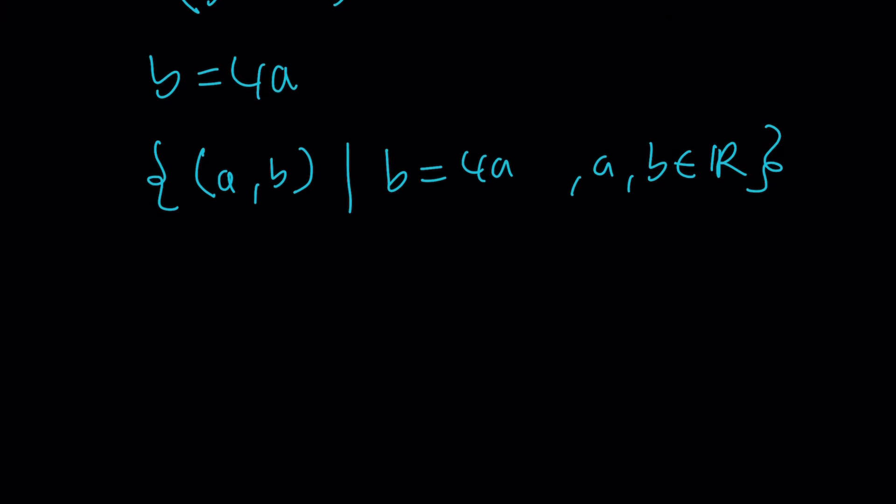Or if you want to look at particular solutions, such as if A is equal to 1 then B is equal to 4. This means it's going to be a solution, right? 1 comma 4. But it looks like there are infinitely many solutions.